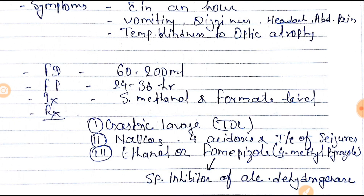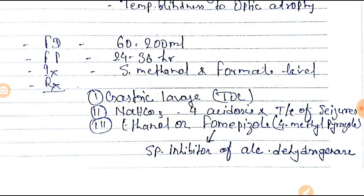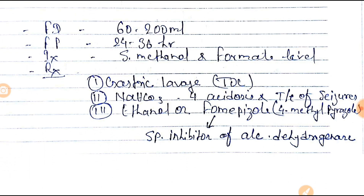The investigation of Methanol Poisoning includes Serum Methanol and Formic Acid level estimation. Treatment begins with Gastric Lavage, which is the treatment of choice. Sodium Bicarbonate is given for correction of acidosis and treatment of seizures.